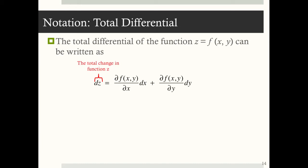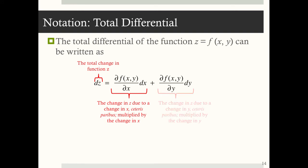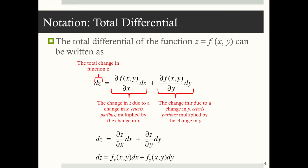In other words, the total change in z equals the change in z due to a change in x — ceteris paribus — multiplied by dx, plus the change in z due to a change in y — ceteris paribus — multiplied by dy. We can also write this as dz equals ∂z/∂x dx plus ∂z/∂y dy, or dz equals f subscript x dx plus f subscript y dy. These are all saying the same thing.